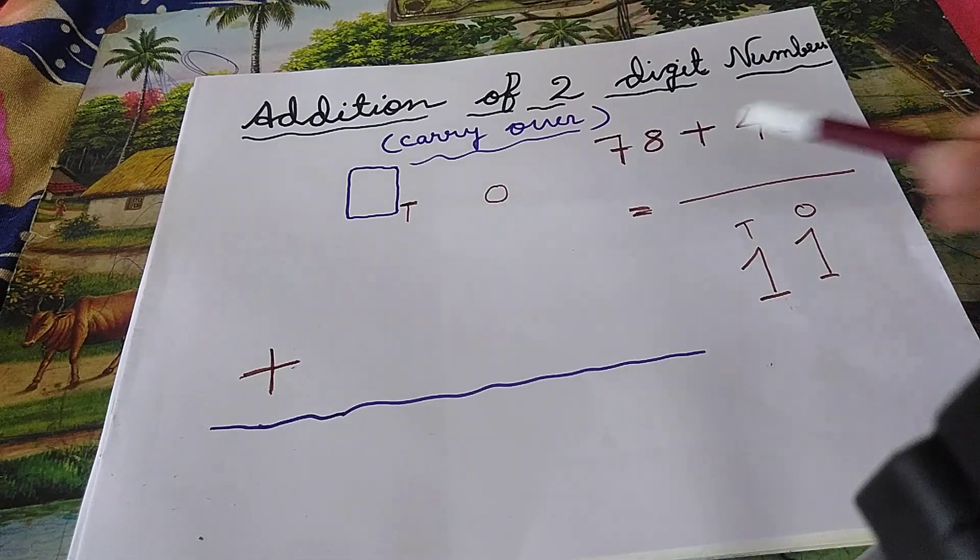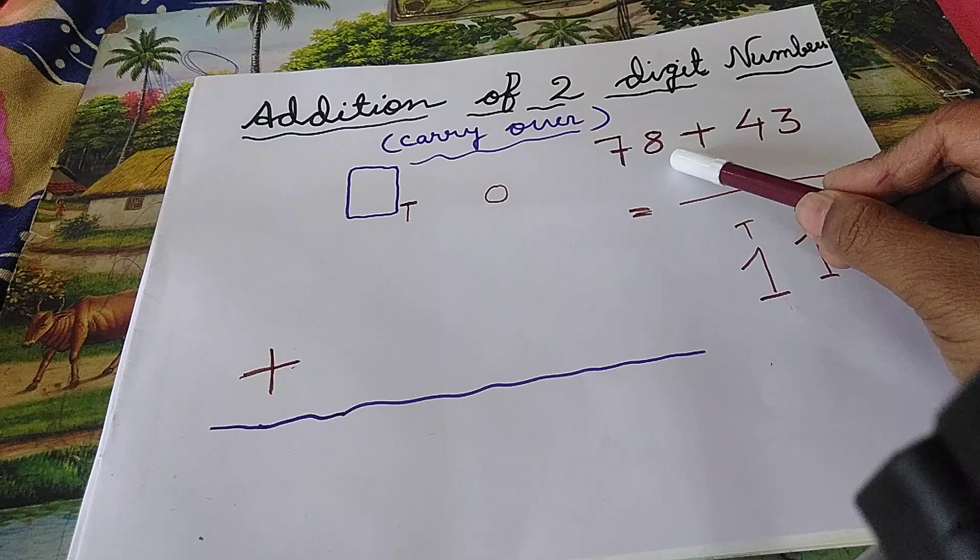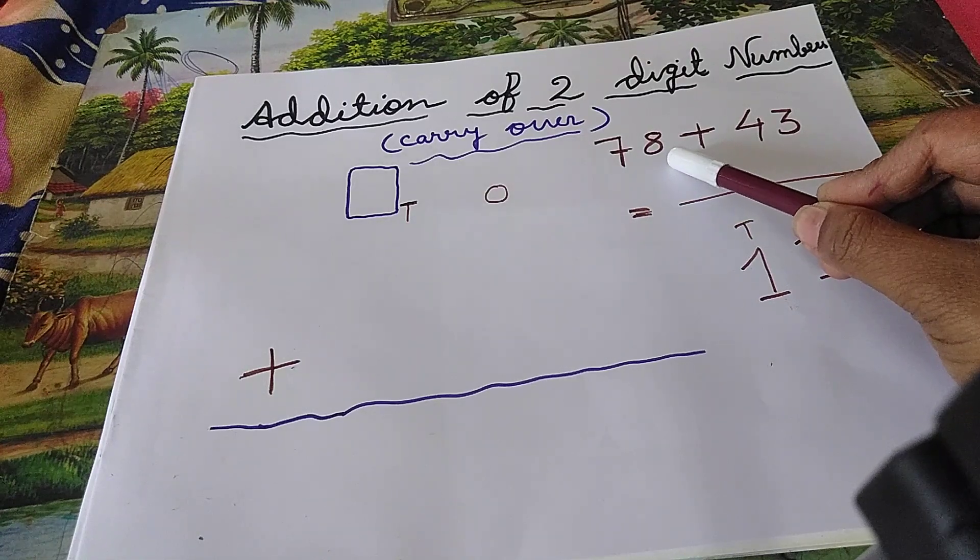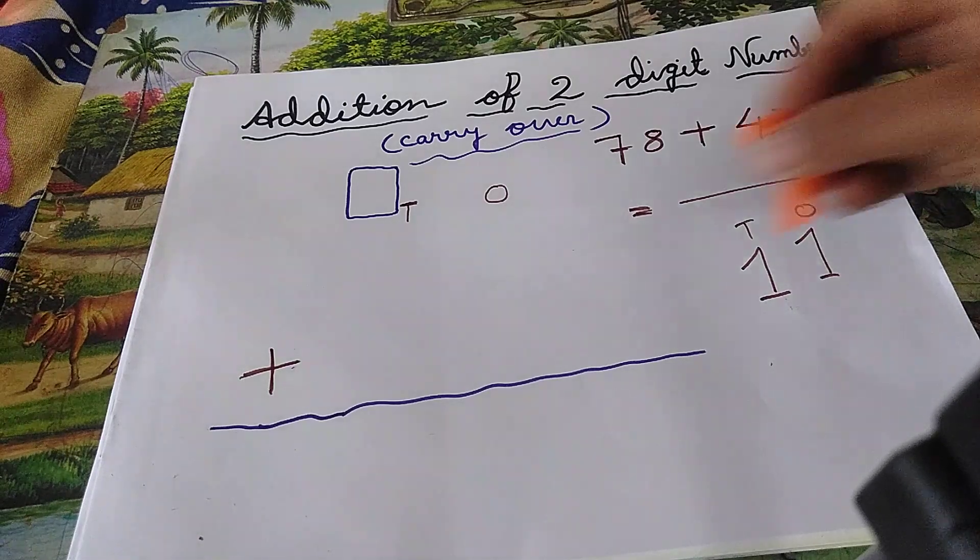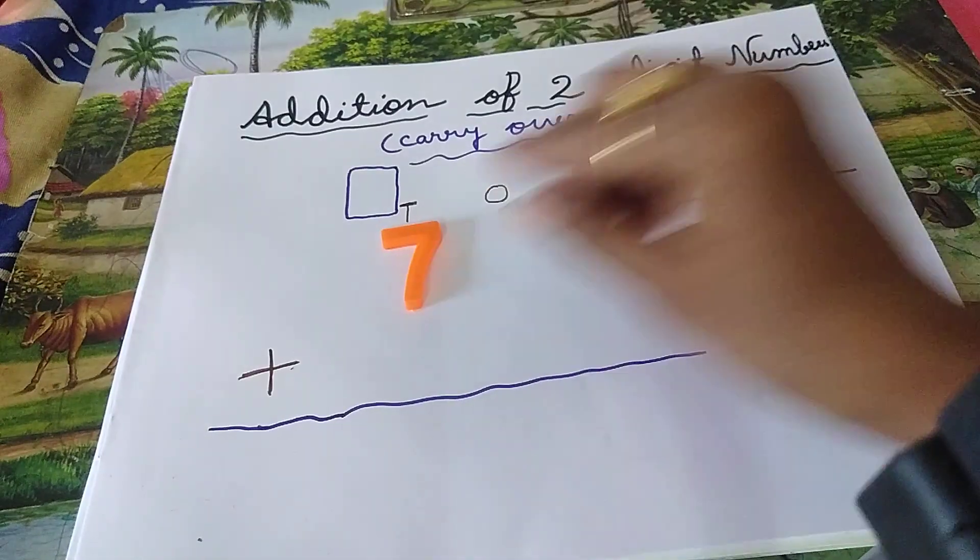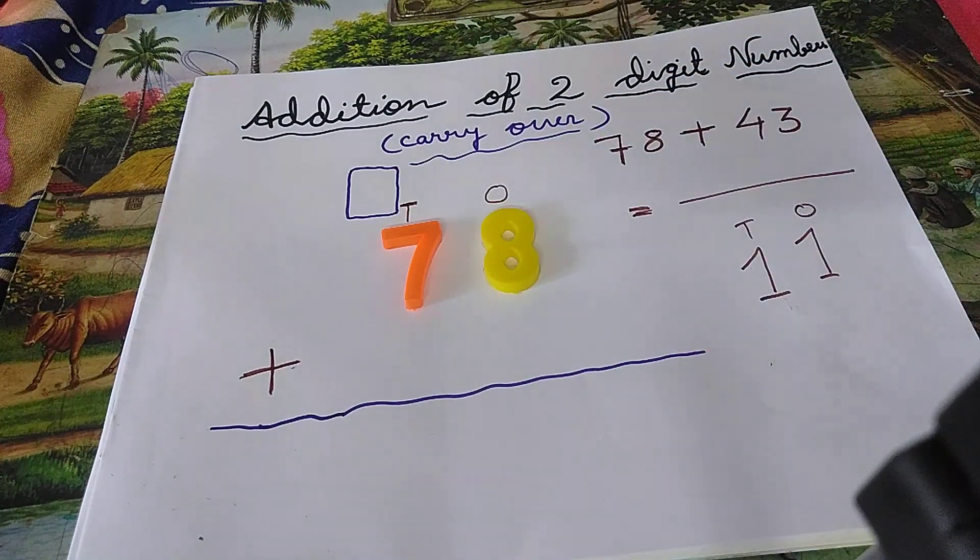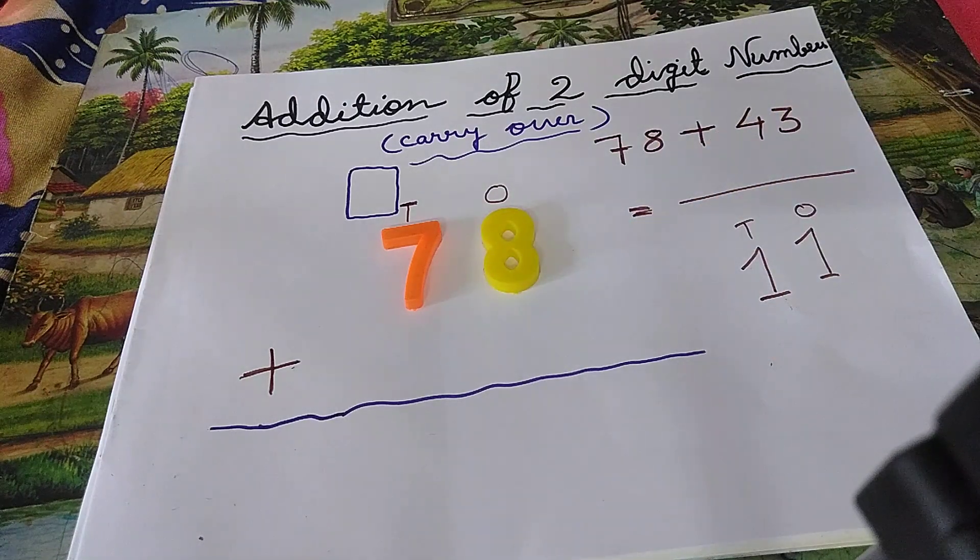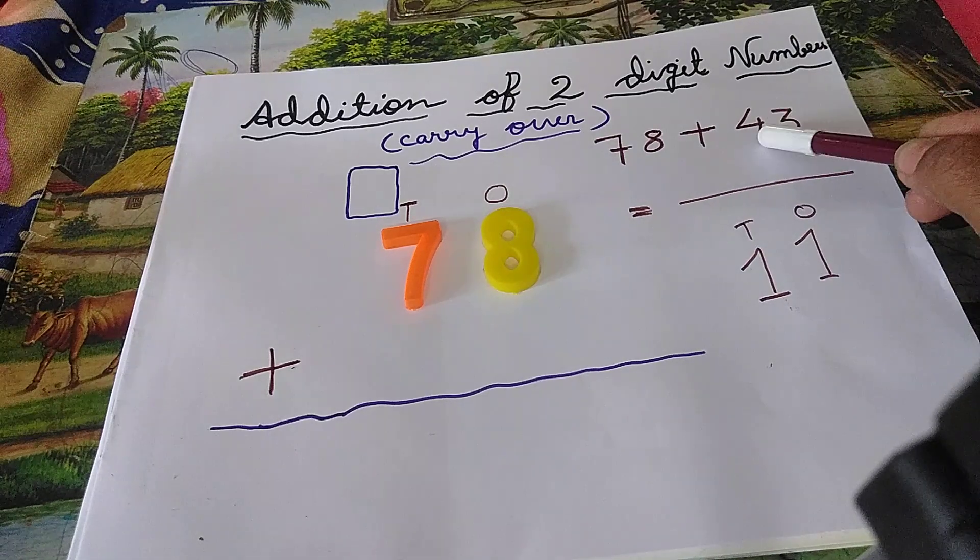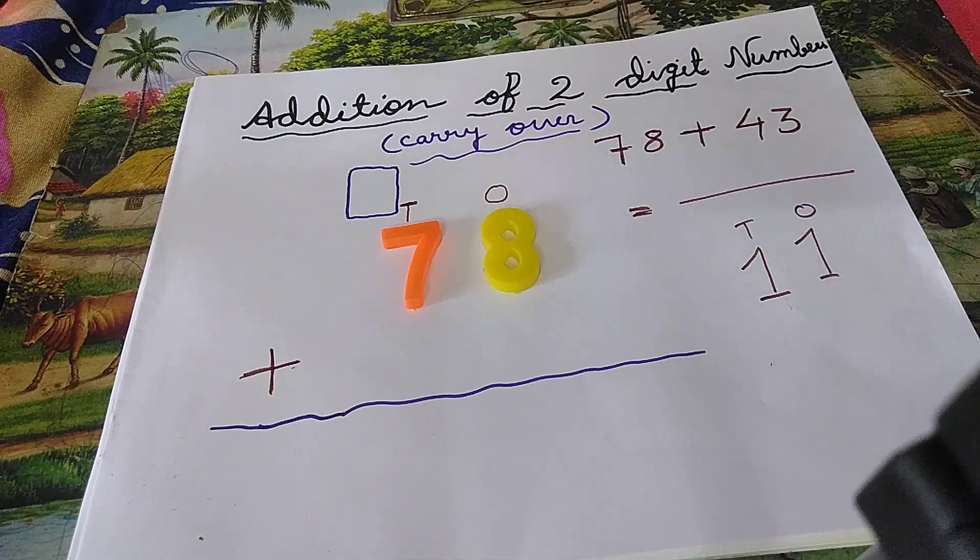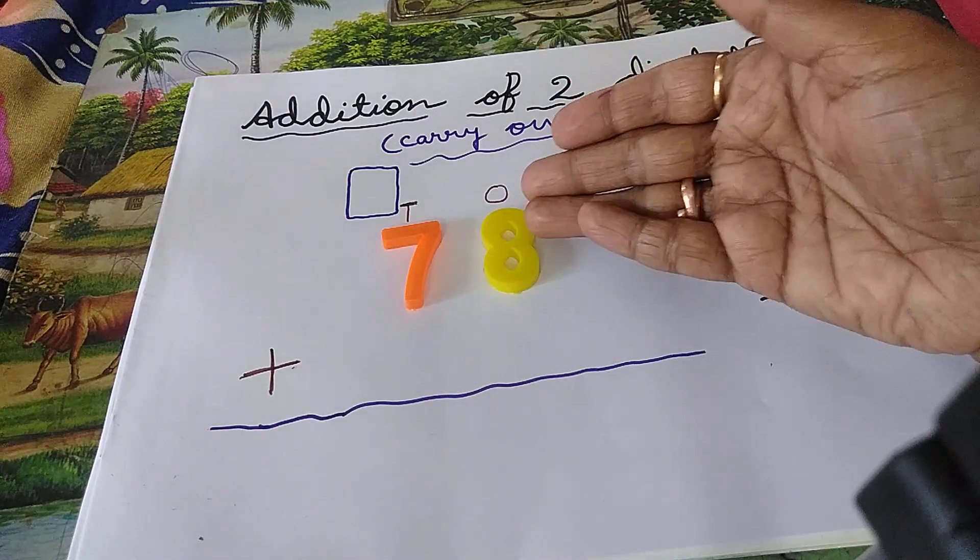See children, among these two numbers, which one is the bigger one? 78 is the bigger number. Okay. So first write 78, 7 and then 8. Then write 43. How to write 43? How to write the second number? See children, start from your right side.